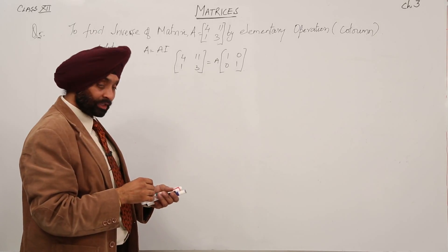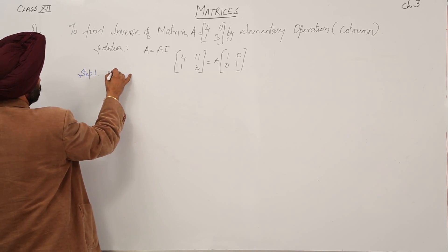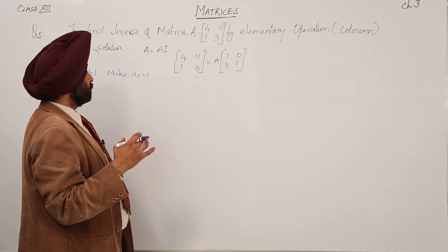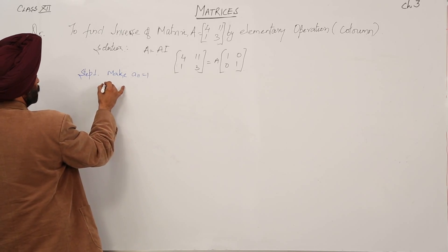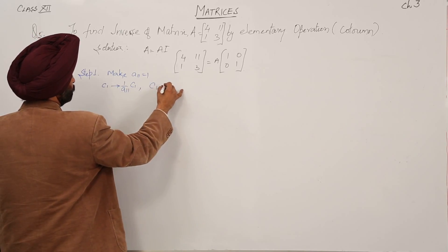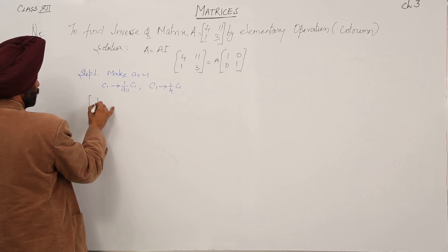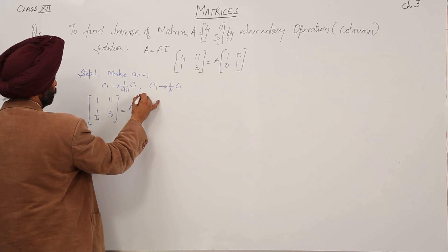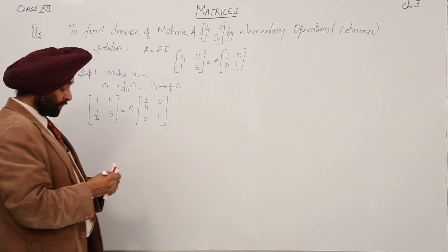Now let's move with Step 1: Make a₁₁ = 1. Now a₁₁ is 4, so we want a 1 there. We are going to multiply the whole column by 1/4. So C1 → (1/a₁₁)·C1, which becomes C1 → (1/4)·C1. This means column 1 will be divided by 4. We now have [1, 1/4; 11, 3] = A · [1/4, 0; 0, 1].